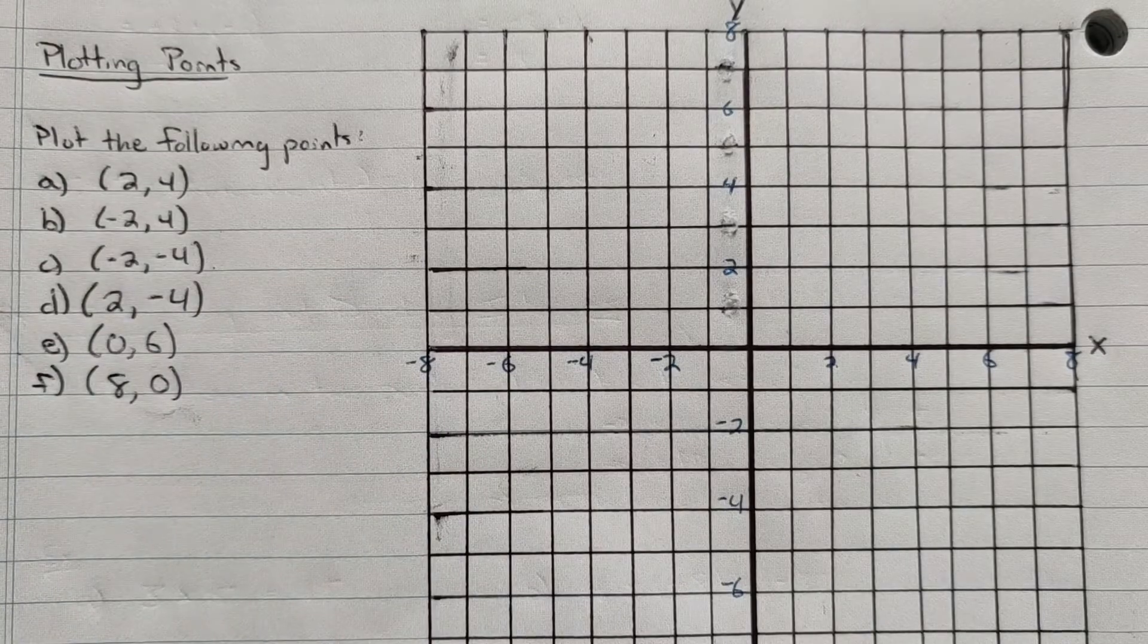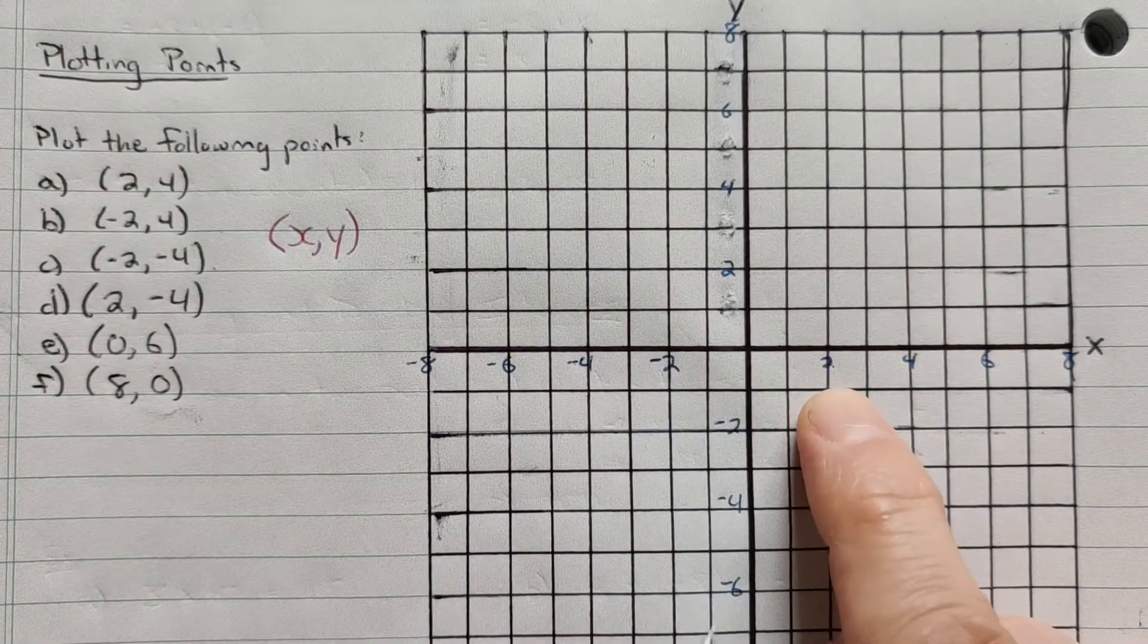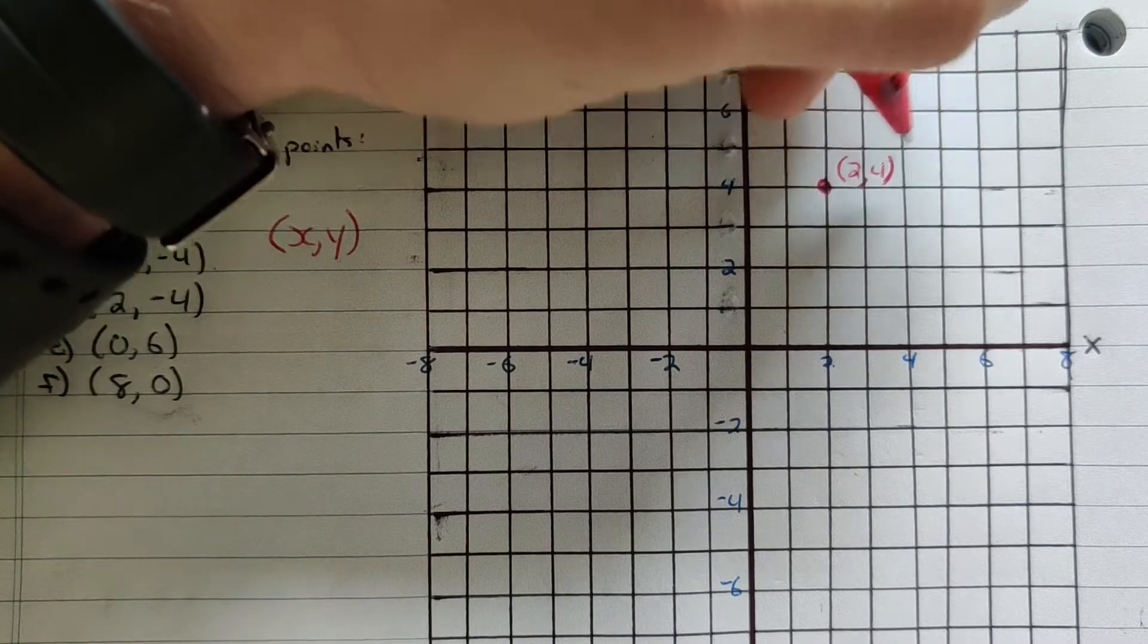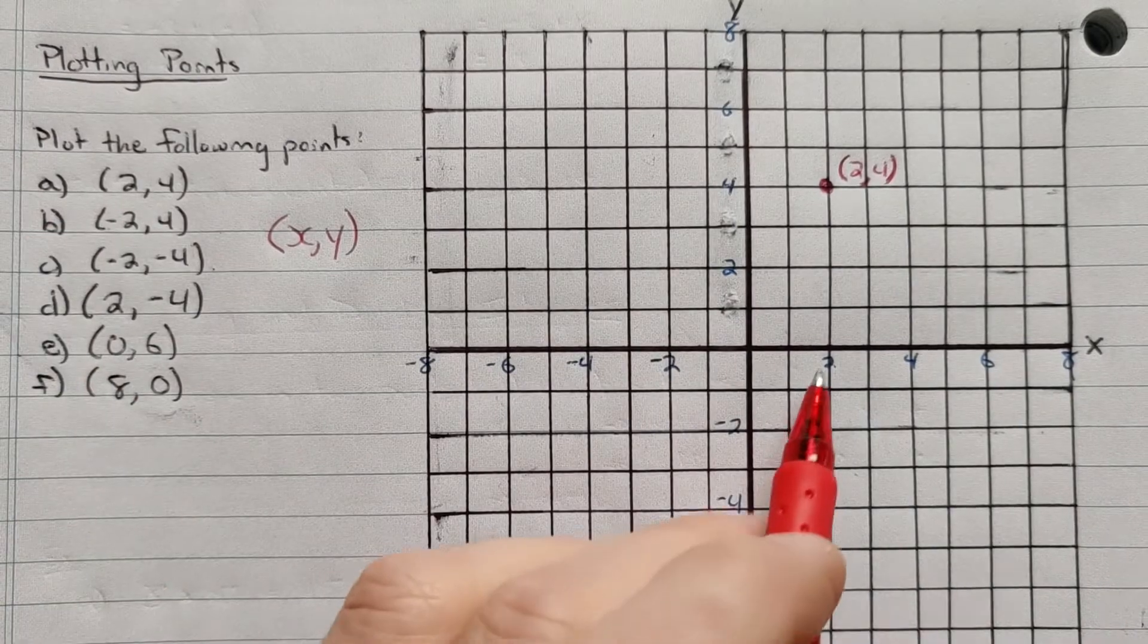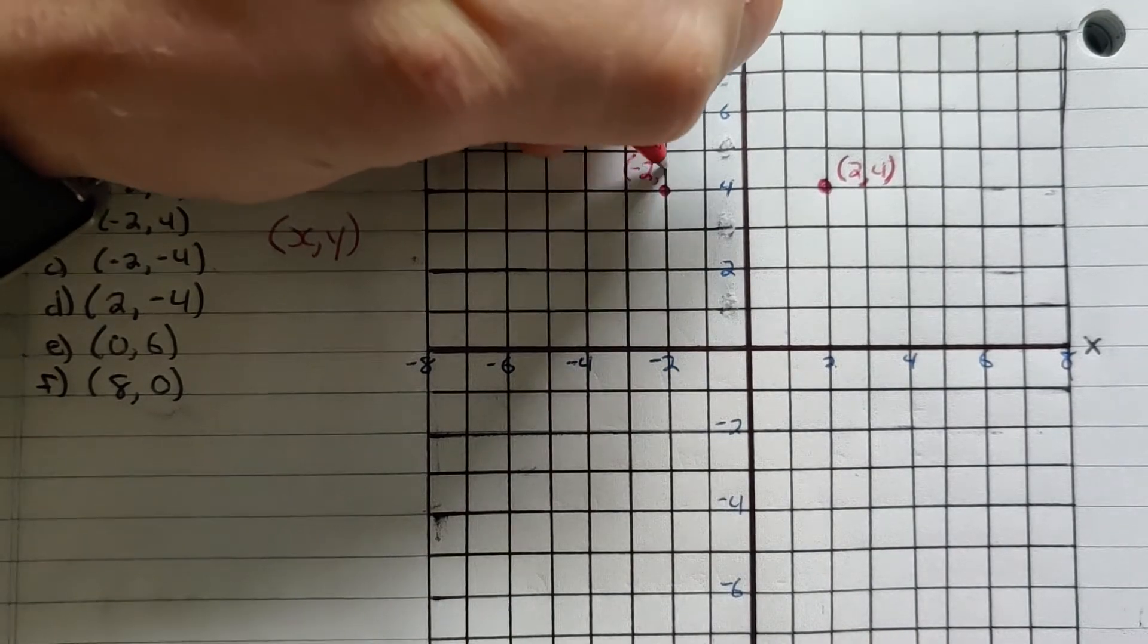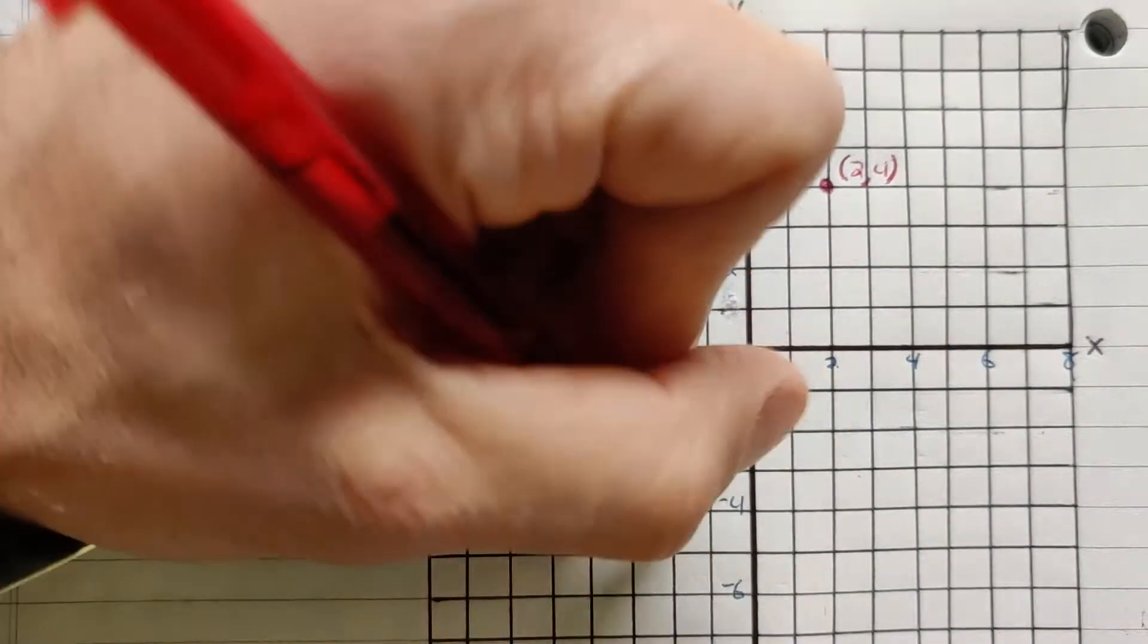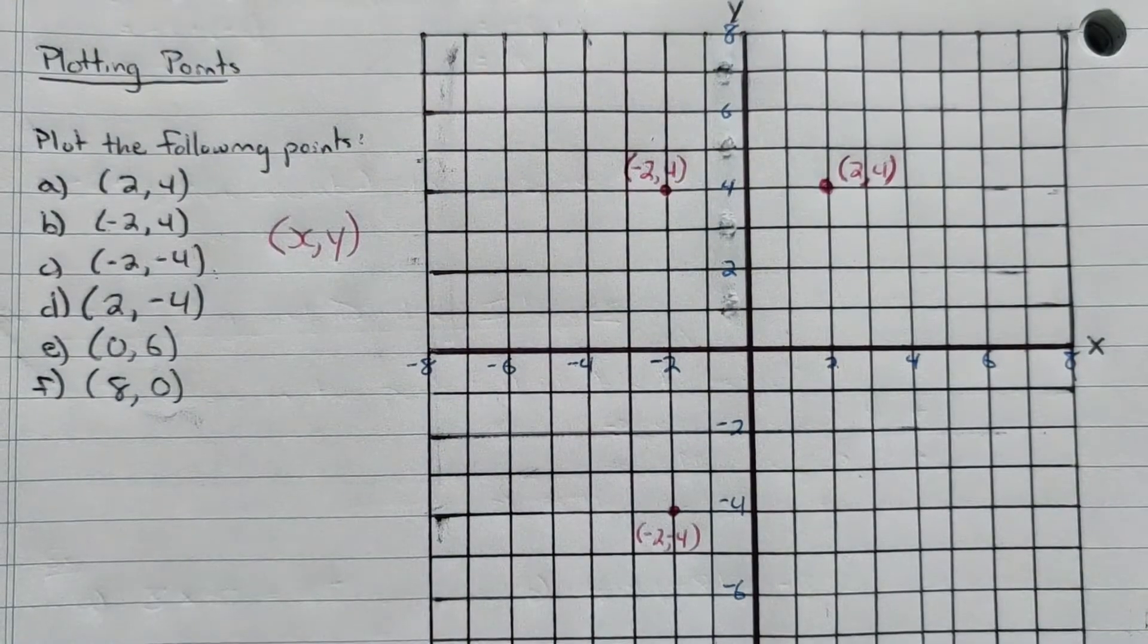Two, four. So again, points are always in the form x, y. So we go to the x coordinate to two, and then we go up to four. So two, four is right here. That is two, four. You can label that like that. The next one is negative two and negative four. So we go along the x axis to negative two, down to negative four. So that's negative two, negative four down there.